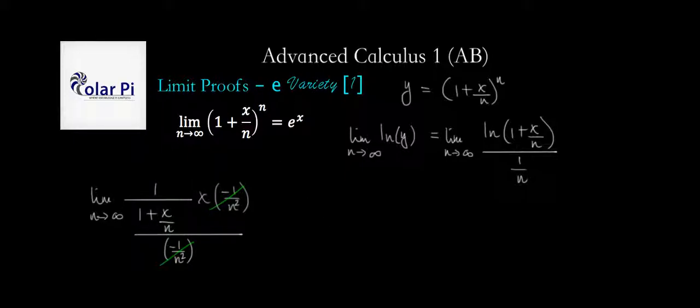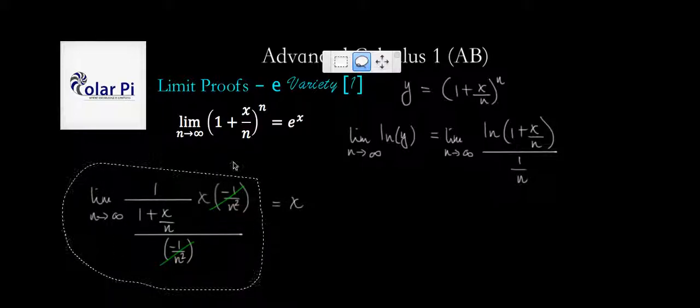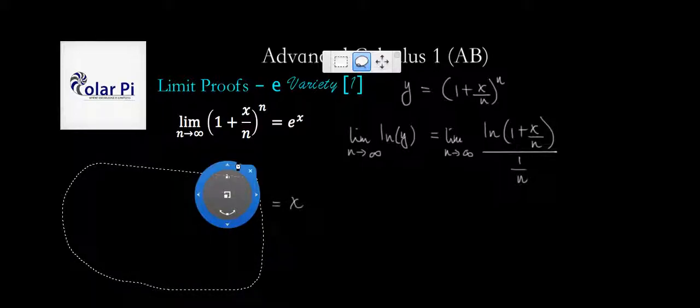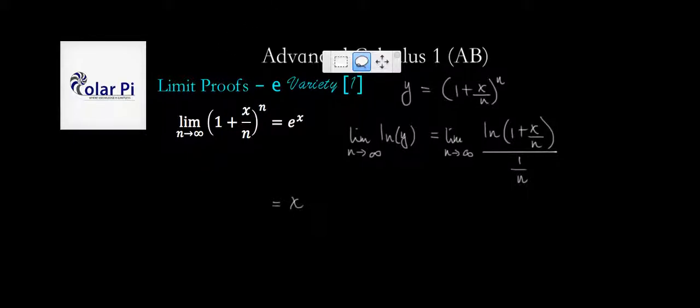Ah, cool. So we get that this is equal to x. But wait, how did we get here? Well, this here is the same as this here, which in turn is the same as this here, and therefore this here is the same as this here. Ah, I get it. So we could do this then. We could get rid of this and, in place of it, write limit as n goes to infinity of the natural log of y.